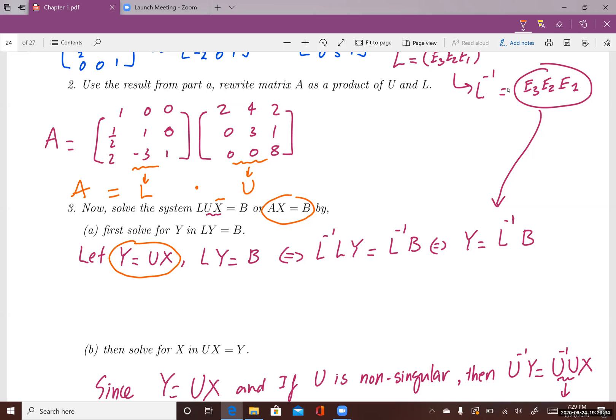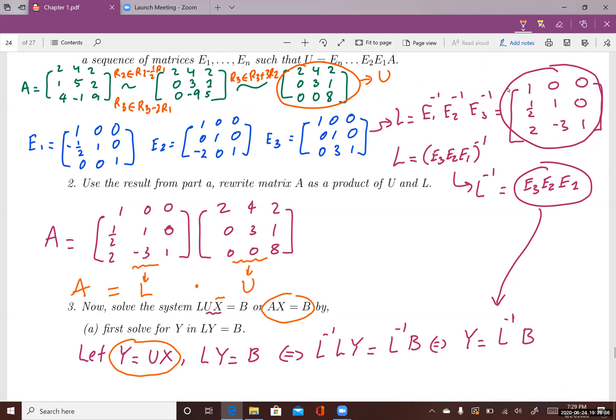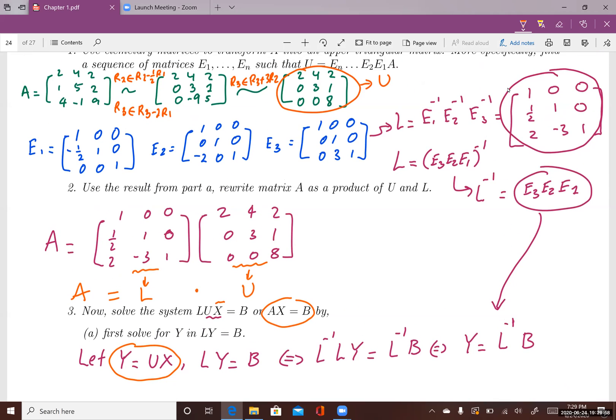We can solve for Y if L, if the lower triangular matrix here is a non-singular matrix, then I can find the inverse of this matrix. So then I can multiply the inverse of L to both sides to solve for Y. Is L non-singular? Well, L is the product of the three elementary matrices.